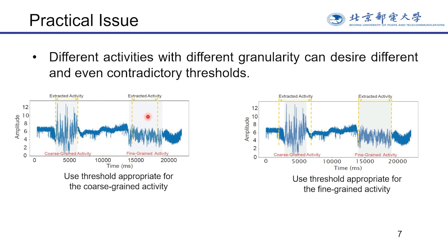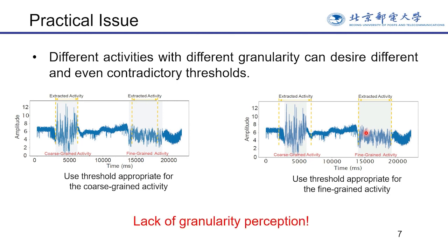But applying the large threshold to fine-grained activities means meaningful CSI parts can be misjudged as noise and the extracted CSI segment can be incomplete. On the contrary, if a small threshold appropriate for fine-grained activity is applied to segment coarse-grained activity, some unnecessary background noise might be included after activity extraction. Before activity extraction, it is difficult to set an appropriate threshold for all kinds of activities without knowing their granularity. The threshold-based method will always suffer performance degradation in this practical case unless it can perceive the granularity of the target activity.